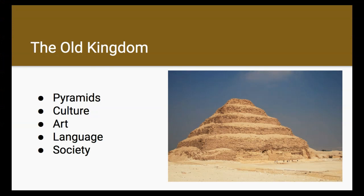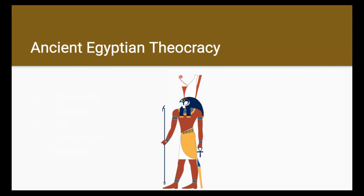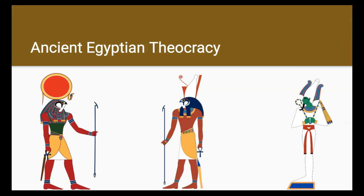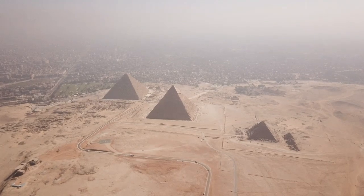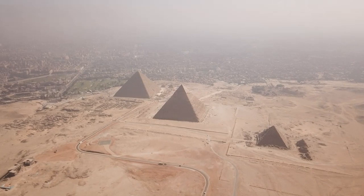Ancient Egyptians believed in many gods and had a theocratic government. The pharaoh was believed to be a living embodiment of the god of the sky, Horus. He was also considered to be the son of the sun god, Ra, and he would become the god of the afterlife, Osiris, after he died. The pyramids were built as tombs for the pharaohs and involved both skilled paid laborers as well as forced slave labor in their construction.